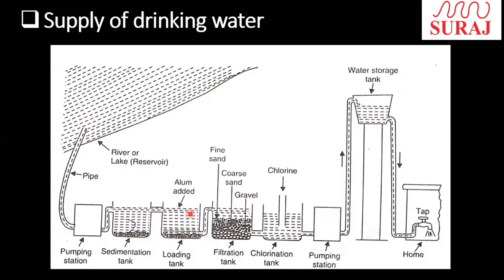We add alum to neutralize the particles. The process is called coagulation. We add alum and it helps to clear the water. Then we do filtration — fine sand, then gravel, with particle size increasing. The water is filtered here. After filtration, we add chlorine for chlorination, which kills microorganisms. Then the water is stored in a storage tank and supplied.